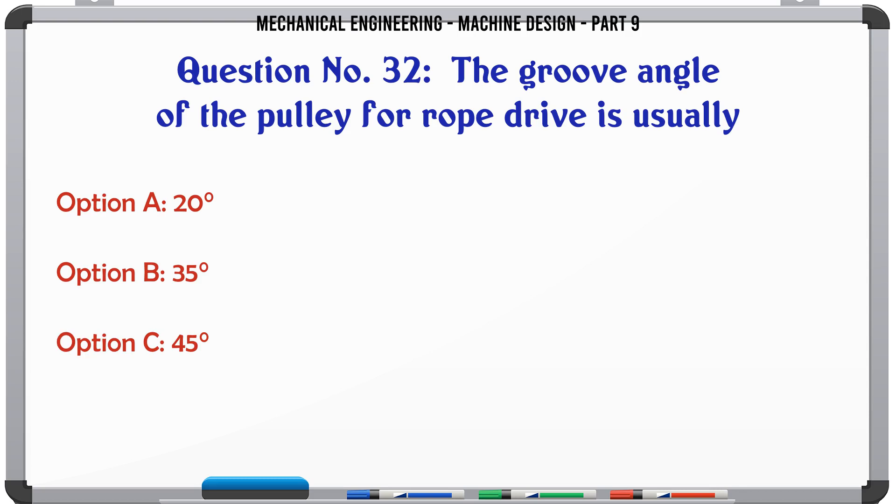The groove angle of the pulley for rope drive is usually: A. 20°, B. 35°, C. 45°, D. 60°. The correct answer is 45°.